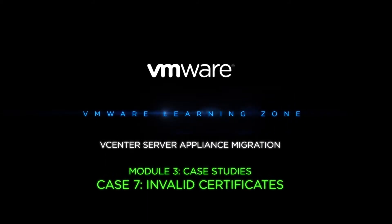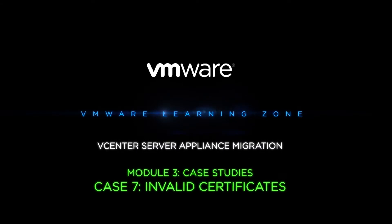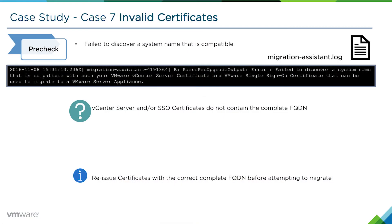In this case study we're going to take a look at an example of an issue that can occur if you have invalid certificates on your source Windows vCenter server and you try to perform a migration. The particular error message that we're going to look at in the migration assistant.log is: 'fail to discover a system name that is compatible with your vCenter server certificate.'